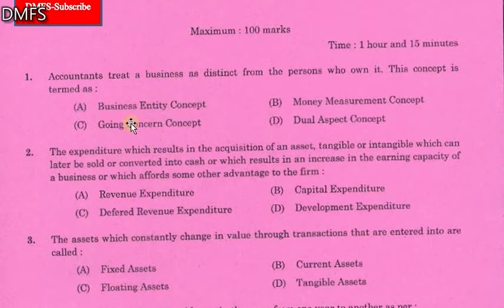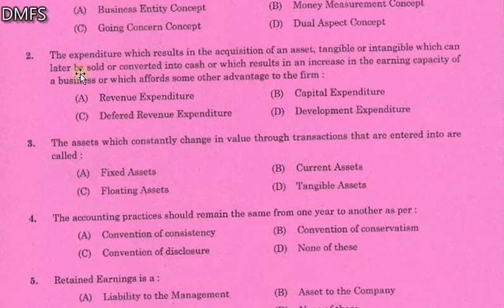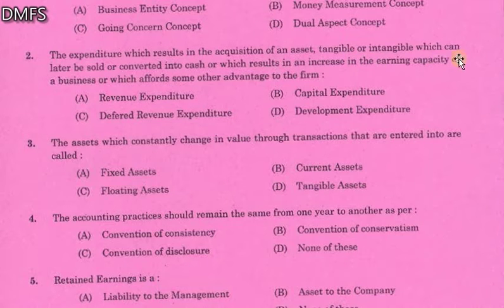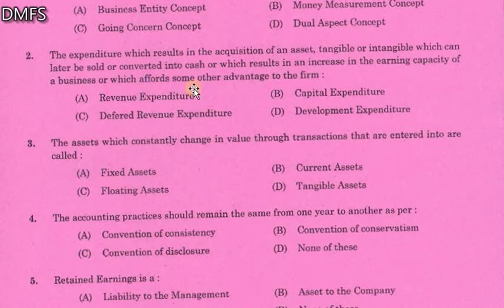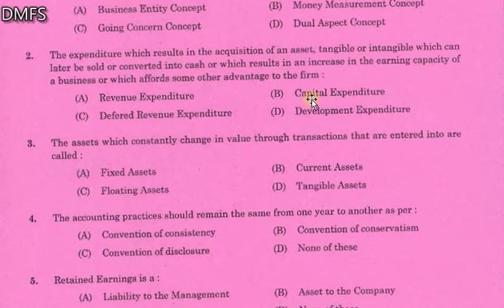The expenditure which results in the acquisition of an asset, tangible or intangible, which can later be sold or converted into cash, or which results in an increase in the earning capacity of a business, or which affords some other advantage to the firm — that is capital expenditure. Option B is the answer.